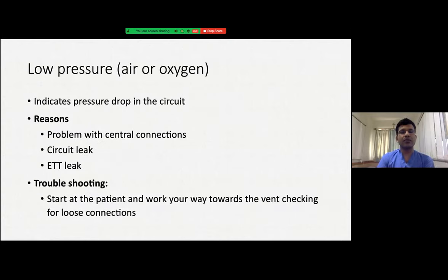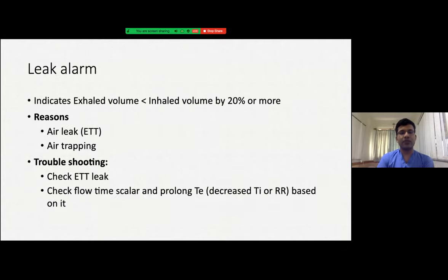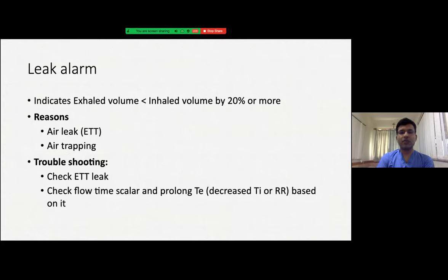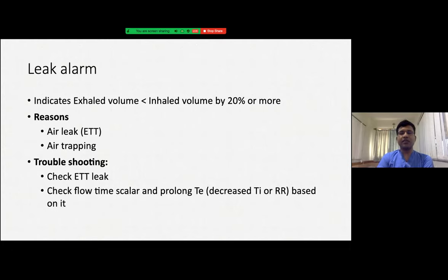A low pressure alarm occurs because of pressure drop — most commonly due to circuit leak or endotracheal tube leak, though it can also occur because of a problem with the central connections. For troubleshooting, start at the patient end and track the ventilatory circuit to the ventilator to find any leak. A leak alarm occurs when exhaled volume in the expiratory limb is less than inhaled volume by 20% or more. Reasons include air trapping or ET tube leak. Troubleshoot by checking ET tube leak and the adequacy of TE; if TE is inadequate there will be air trapping, which can be seen in the flow time scalar.